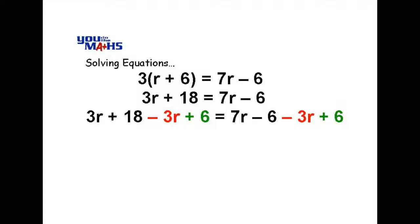Now when we've completed that, on the left hand side the R's are removed and we end up with just 18 plus 6 which is 24. And on the right hand side the 6's are removed and we've got 7R minus 3R is equal to 4R.